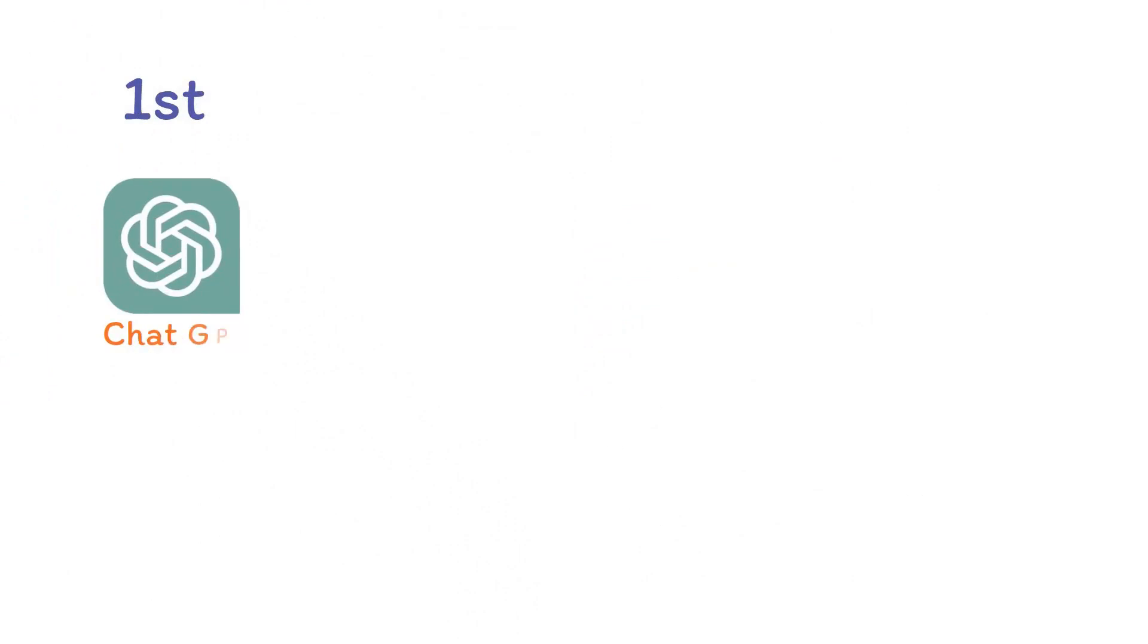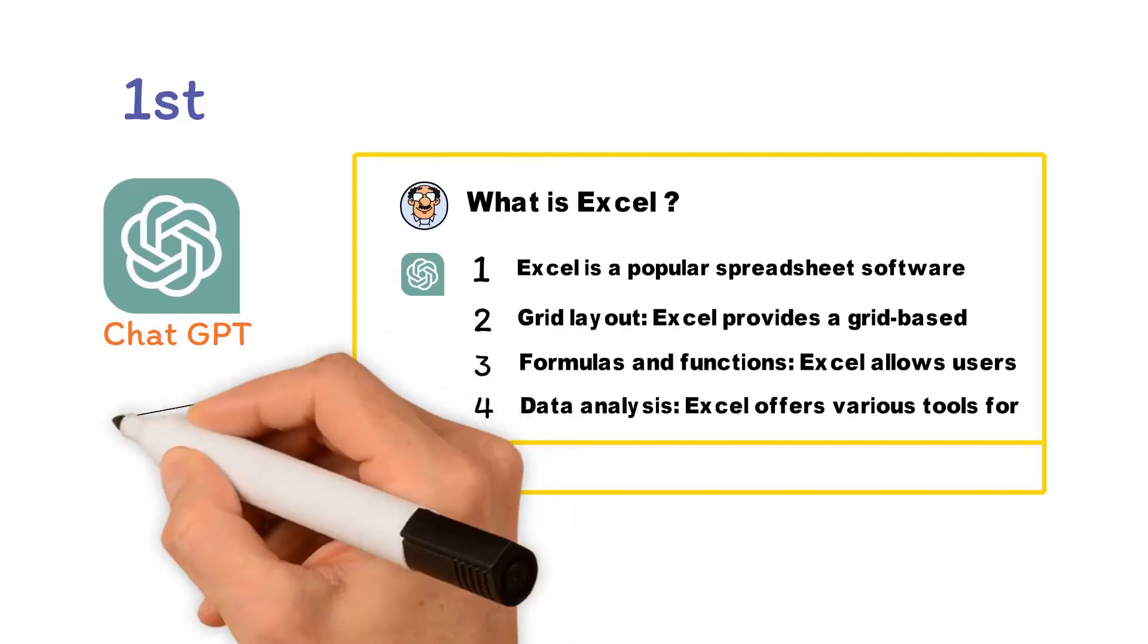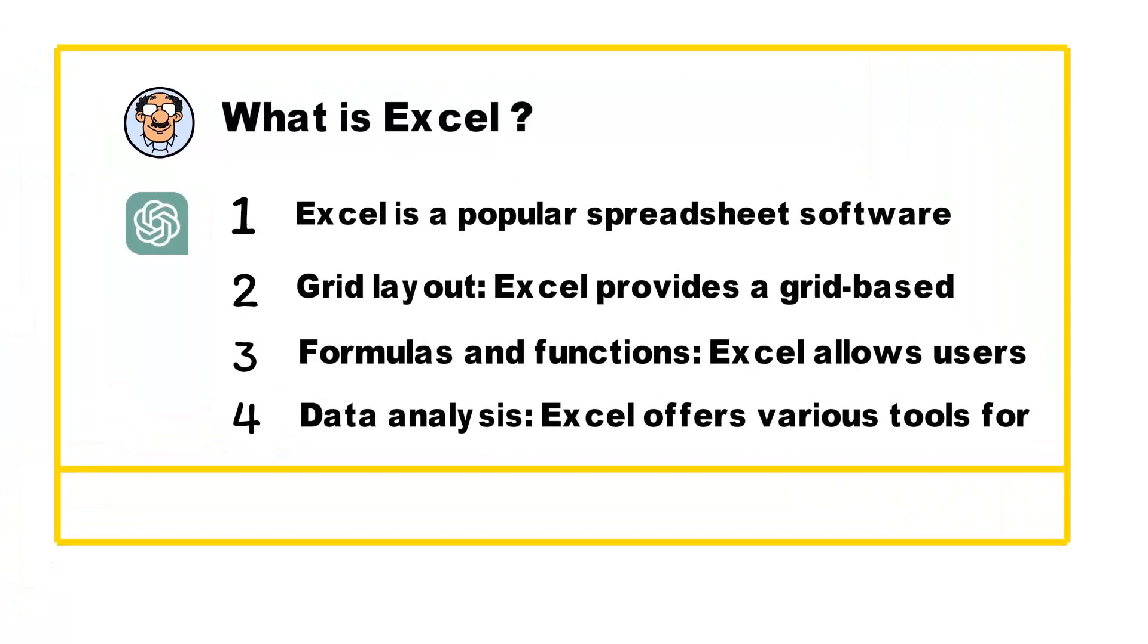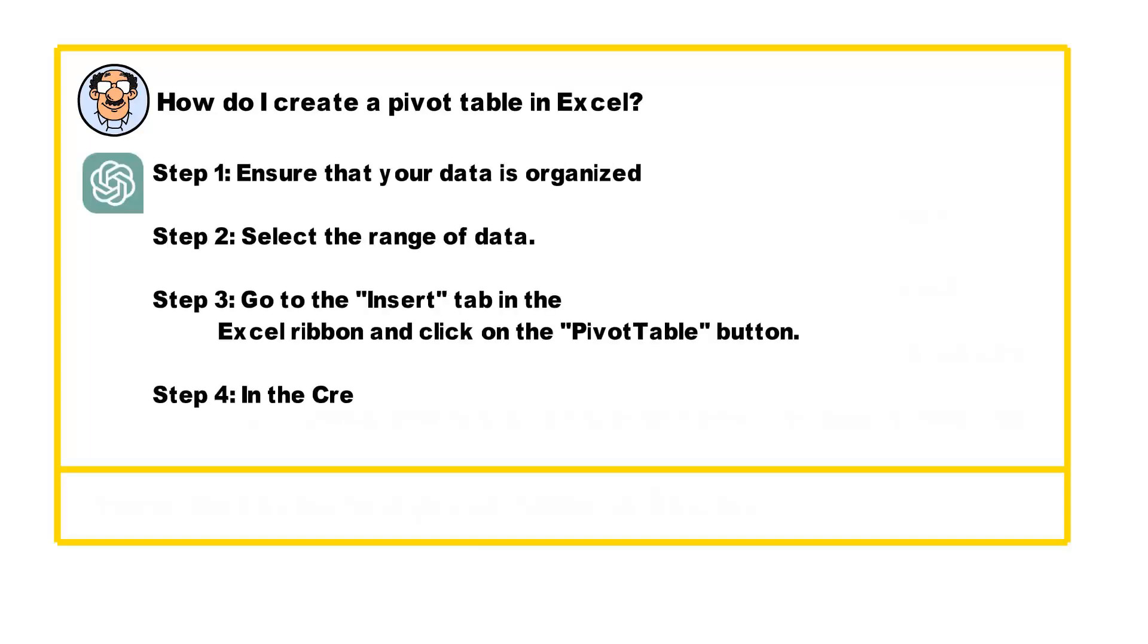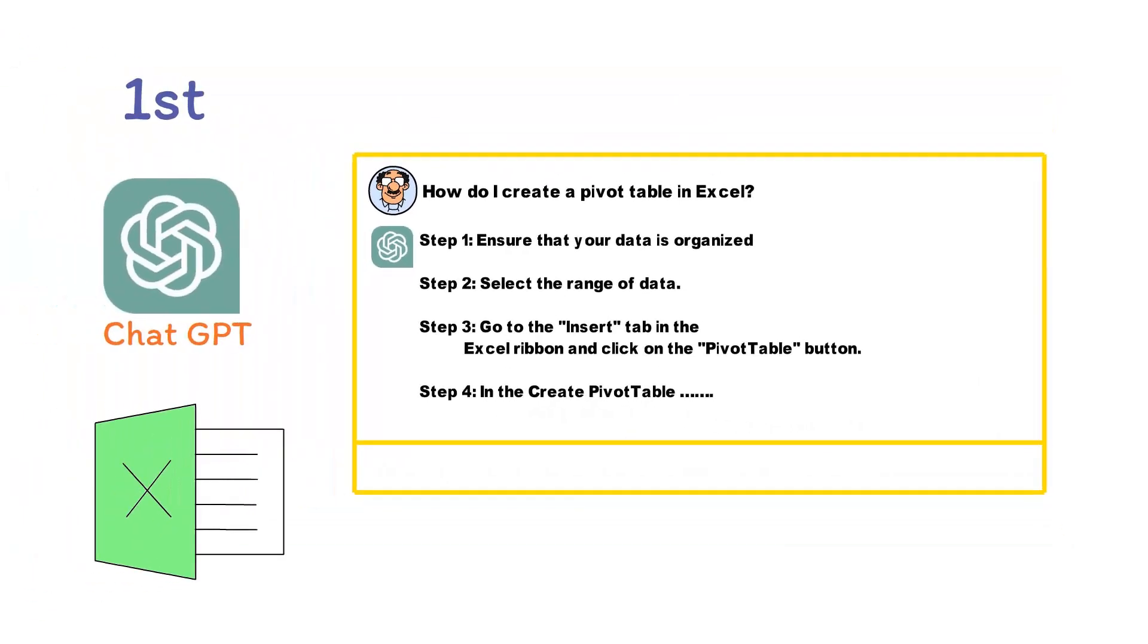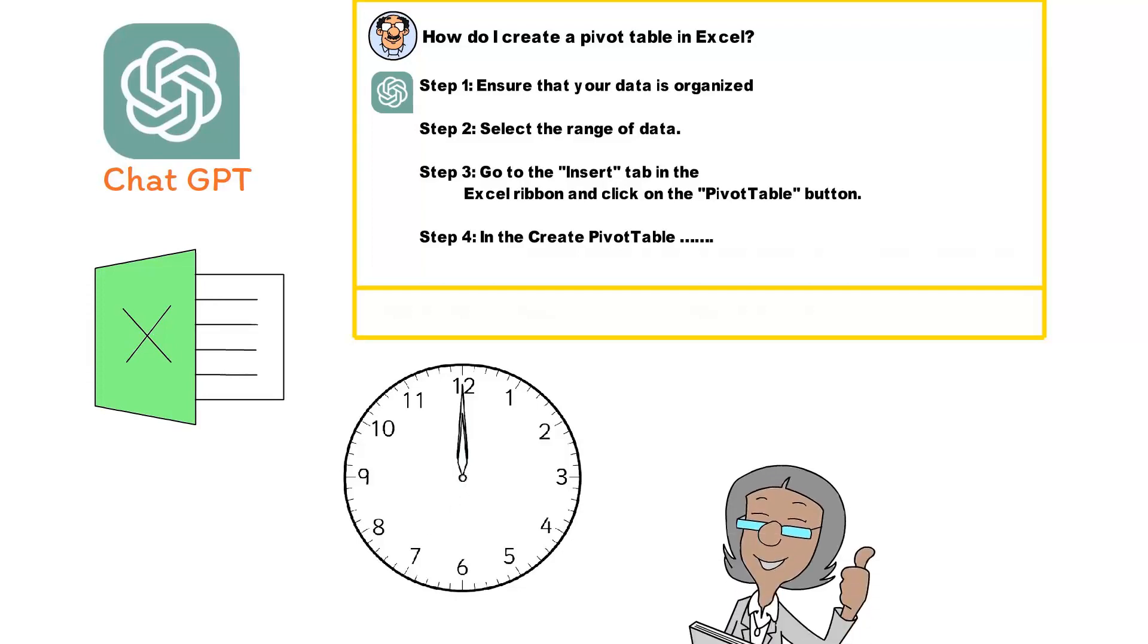Firstly, one of ChatGPT's greatest strengths lies in its capability to provide step-by-step instructions for Excel operations, whether you need to perform simple tasks like creating a formula or more advanced functions such as VLOOKUP, pivot tables, and even macros. You simply need to ask ChatGPT. For instance, asking how do I create a pivot table in Excel would prompt the AI to provide detailed, step-by-step instructions to achieve that task. This instant access to solutions for various Excel operations can save you countless hours of searching and troubleshooting, thus enhancing your efficiency.